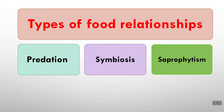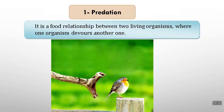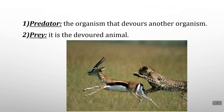Predation is a food relationship between two living organisms where one devours another. For example, this snake will eat this bird — that relationship is called predation. Predation is a food relationship between two living organisms where one organism, such as a snake, devours another, such as a bird.